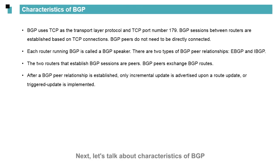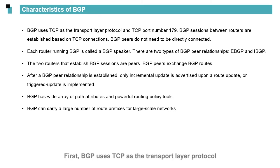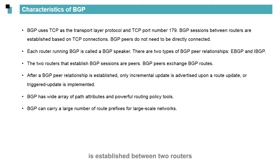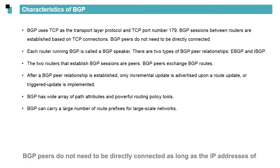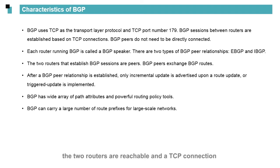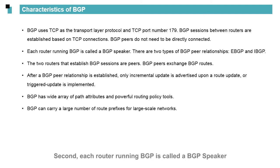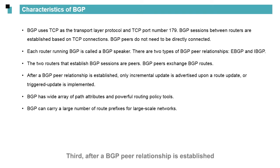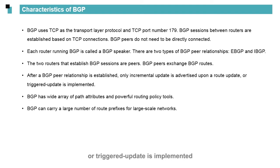Next, let's talk about characteristics of BGP. First, BGP uses TCP as the transport layer protocol. A TCP connection must be set up before a BGP peer relationship is established between two routers. BGP peers do not need to be directly connected, as long as the IP addresses of the two routers are reachable and a TCP connection is established based on TCP port 179. Second, each router running BGP is called a BGP speaker. BGP is classified as eBGP or IBGP. Third, after a BGP peer relationship is established, only incremental updates are advertised upon a route update.